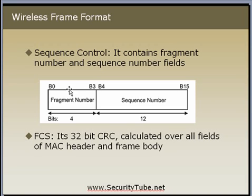The last important field is the sequence control field. The sequence control field contains the fragment number and sequence number information. The first four bits contain the fragment number if the current frame is using fragmentation, and the remaining 12 bits contain the sequence number of that frame. Now, what is the sequence number?